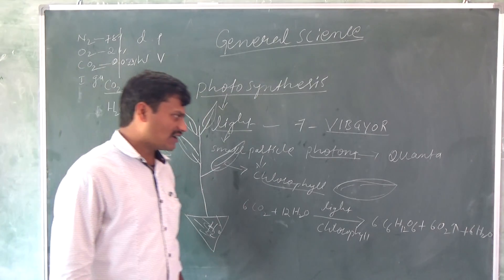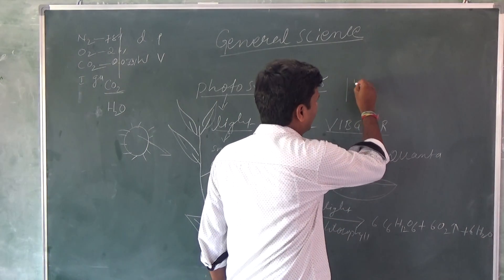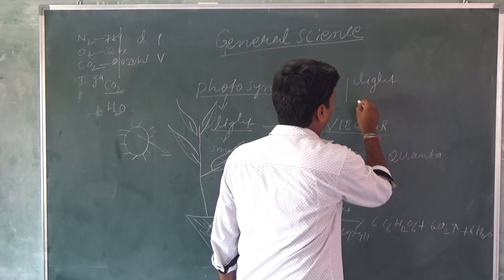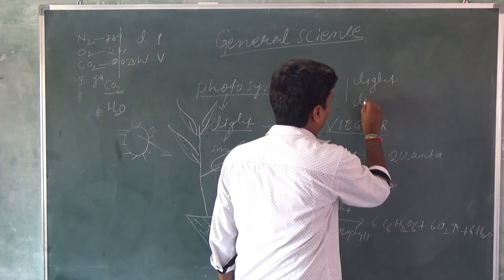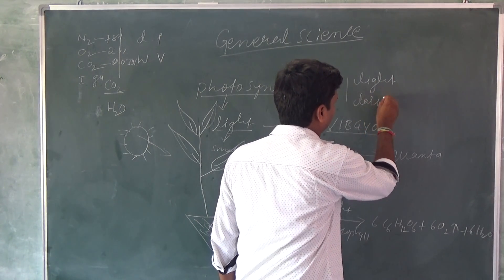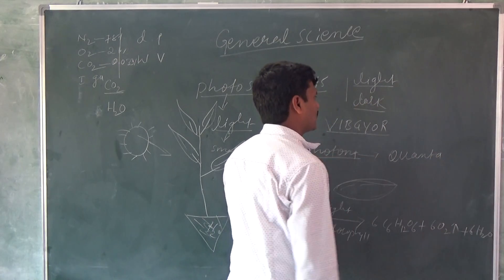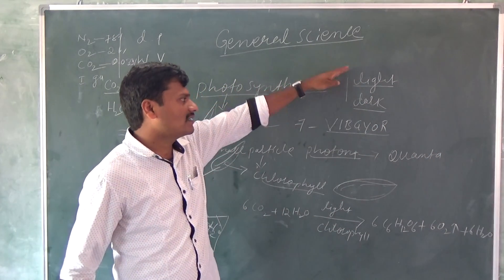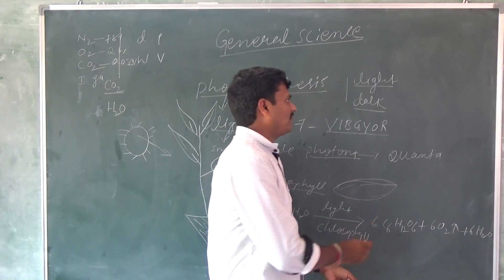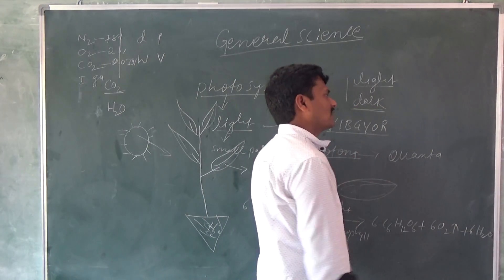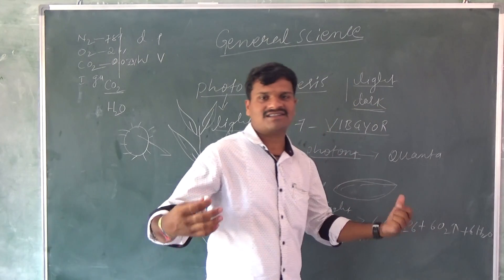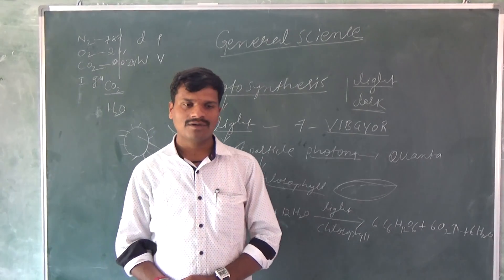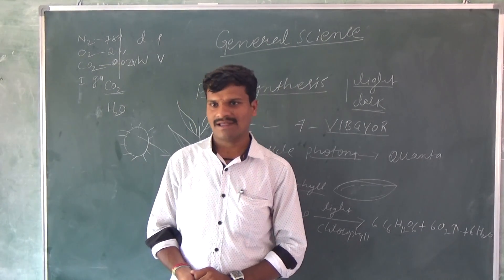This photosynthesis equation was described by two scientists. There are light reactions and dark reactions. The scientists' names are Melvin Calvin and Krebs. We will discuss this in the next class. See you tomorrow — have a good day!